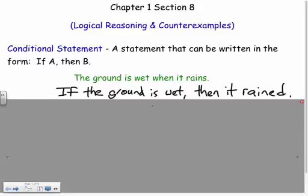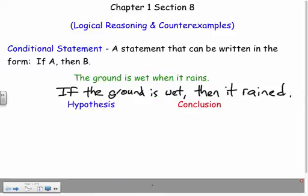And each part of this has a name to it. The if always is called the hypothesis. So my hypothesis in this case would be the ground is wet. And I draw a conclusion from that. If I think my hypothesis is the ground is wet, then my conclusion would be it rains.